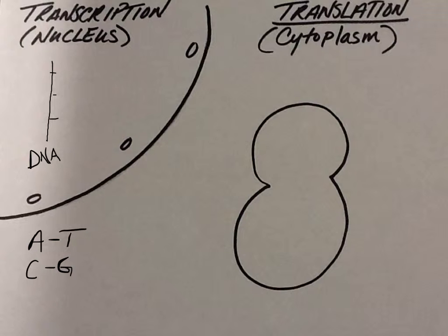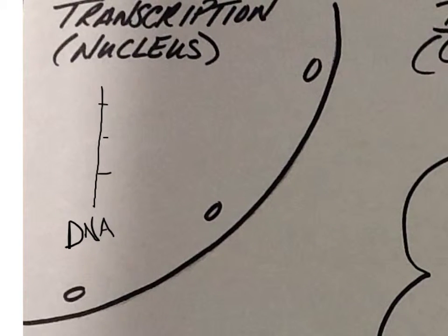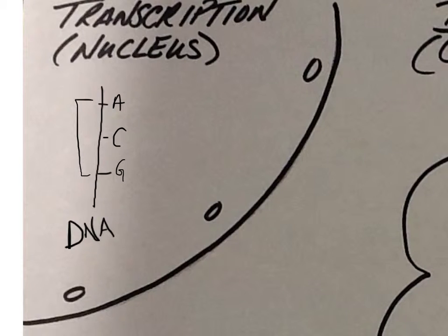So this is our DNA. It's a very long strand — we've unwound it, separated it into two strands, and we're going to copy the information onto an mRNA molecule. These strands have many, many long sequences of nucleotides. Each sequence of three nucleotides is, for DNA, what we call a triplet. These triplets are eventually going to be read to make codons. Codons are sequences of three nucleotides, but on the mRNA.